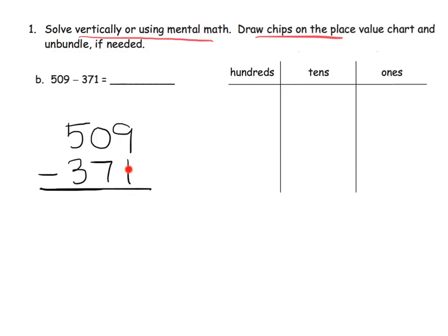In the ones place, I have 9 ones take away 1 one — that's straightforward, that's 8 ones. Now in the tens place I have no tens at all and I'm supposed to take away 7, so I'll go to the hundreds and unbundle one of the hundreds. That leaves me with 4 hundreds and gives me 10 tens. 10 tens take away 7 tens gives us 3 tens. Then 4 hundreds take away 3 hundreds is 1 hundred. Our answer is 138.